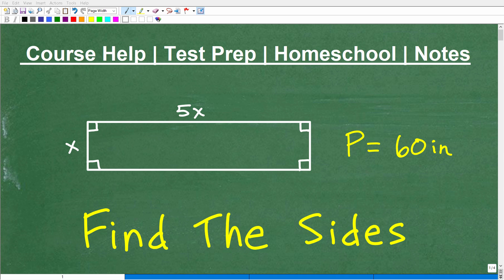Okay, let's tackle this basic algebra word problem. And what we have here is a rectangle, and we're told that the perimeter is equal to 60 inches. So we've got to know what that word means, perimeter.